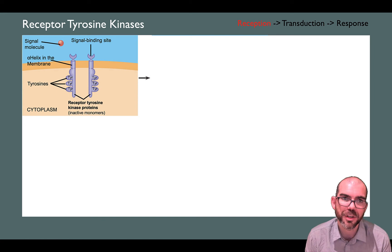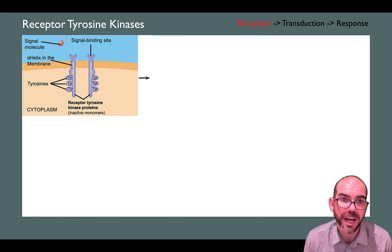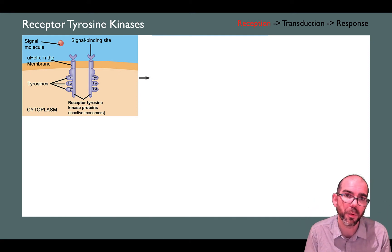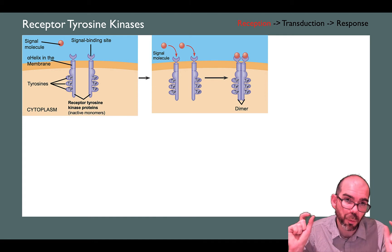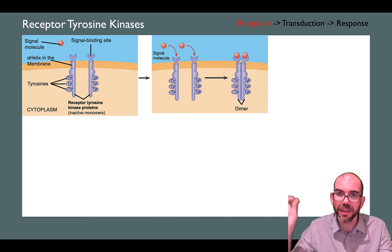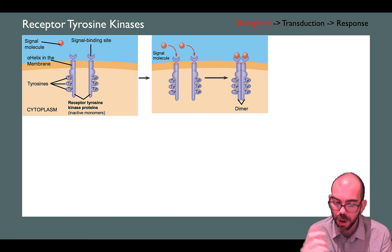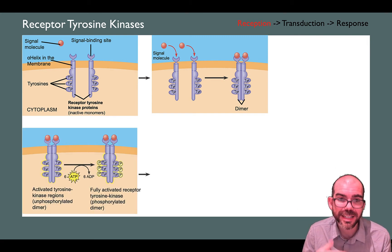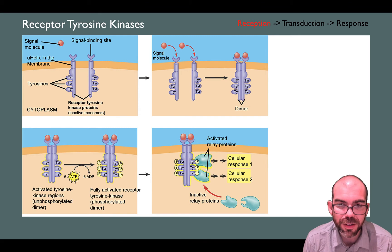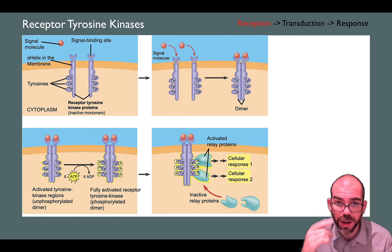Another example of a receptor is a receptor tyrosine kinase. Here you can see two receptor tyrosine kinases that are apart — which will be important in a moment. If a ligand binds to both receptors, one on each of the tyrosines, they will combine together into a dimer. Once they combine into a dimer, they can then be phosphorylated — six ATPs come up and apply a phosphate to each of the tyrosines.